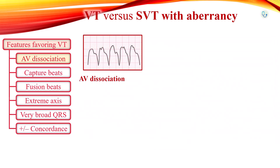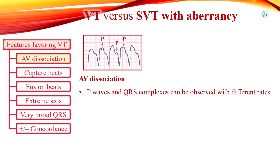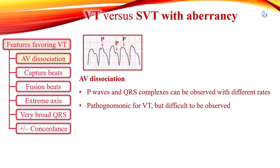In AV dissociation, P waves and QRS complexes may be observed with different rates. AV dissociation is pathognomonic for ventricular tachycardia, but P waves are often superimposed on QRS complexes and may be difficult to observe. Capture beats and fusion beats are also evidence of AV dissociation and indicate VT.